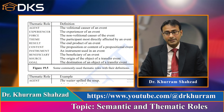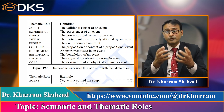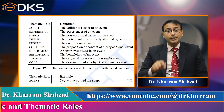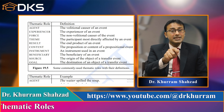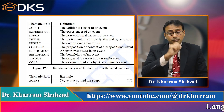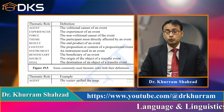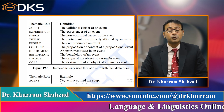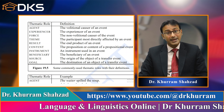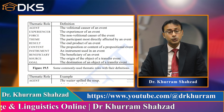Result is the end product of an event. Content is the proposition of the sentence or event. Instrument is something used in an event — for example, 'I opened the door with a key'; 'with a key' is the instrument. Beneficiary is the beneficiary of the event. Source is the origin of the object in a transfer event. Goal is the destination of the object in a transfer event. With the help of examples, I hope these things will be very clear to you.